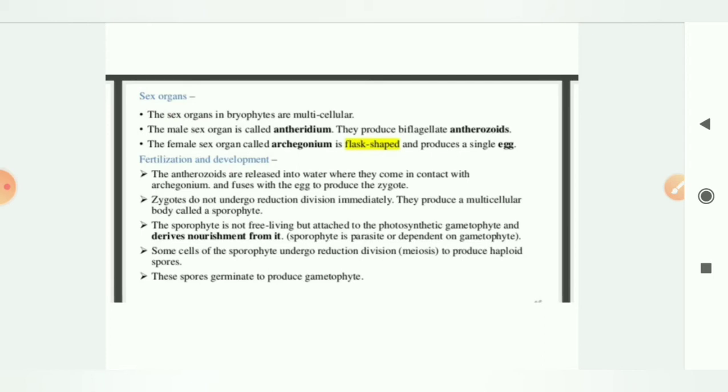If I'll talk about fertilization and development, what is fertilization? We all know that the fusion of male and female gamete is known as fertilization. So exactly what happened: the antherozooids will release into the water and during that moment they will come in contact with the archegonium. As soon as they will come in contact with archegonium, it contains egg, so it will fuse with it and will produce zygote.